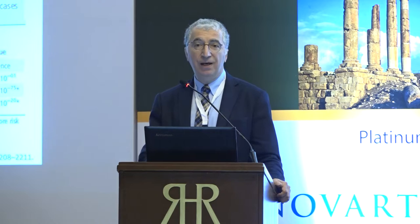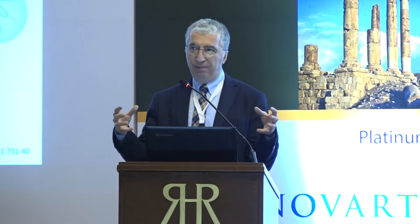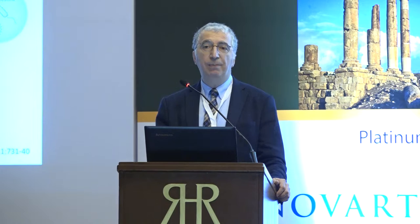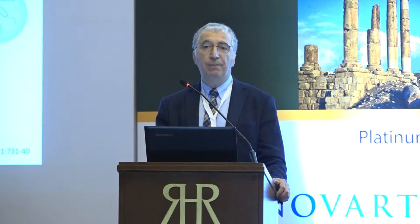We now have a new concept developed by ourselves and Dérince McGonagle: MHC1 opathy — HLA class 1 molecule-associated diseases. Depending on your HLA combination and the peptidome produced by ERAP1, if it is B27 with ERAP1 haplotype 1 and 3, the result is ankylosing spondylitis; if it is haplotype 10 and B51, the result is Behçet's disease. So the puzzle is starting to be solved.